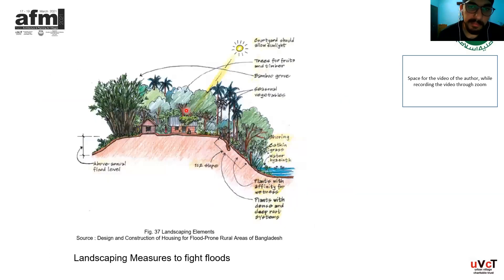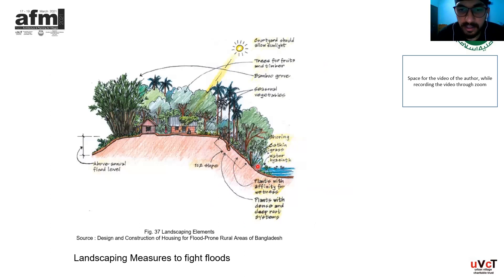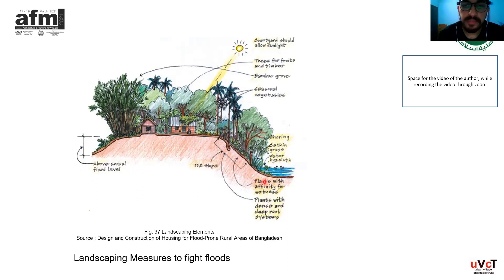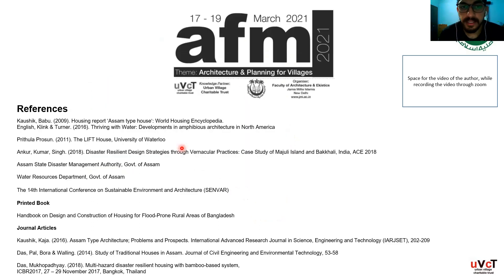For landscaping measures, courtyards should allow sunlight, and trees for fruit and timber should be used. Plants with an affinity for wetness should be grown along slopes, and catkin grass should be cultivated. Trees with dense root systems like coconut or palm trees should be used to protect from erosion by holding soil together. Bamboo plantation should also be done as it is locally available and also helps hold the soil together. Thank you.